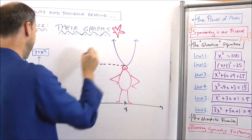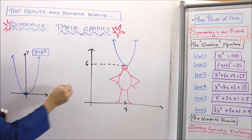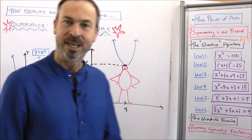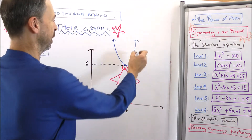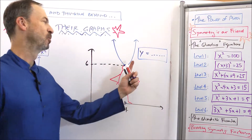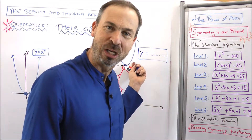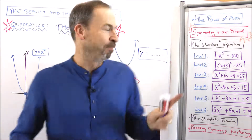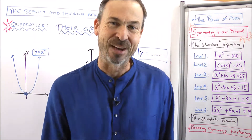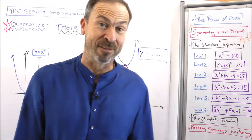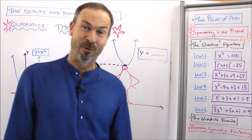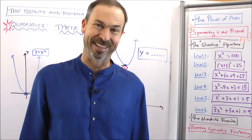So instead of being centered right at the origin, I want the graph now centered at the point four comma six. Can you find a formula — y equals some formula in terms of x — whose graph is the symmetrical U-shaped graph based at that point? If you want to try it, pause the video, and then I'm going to give away my thinking after this.